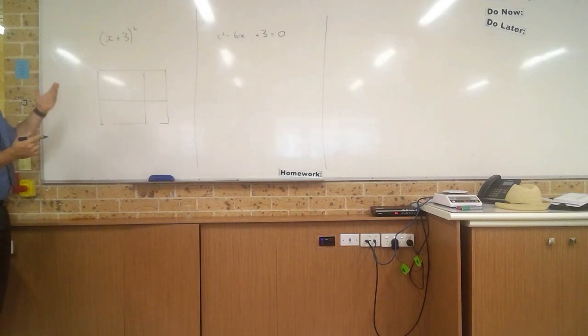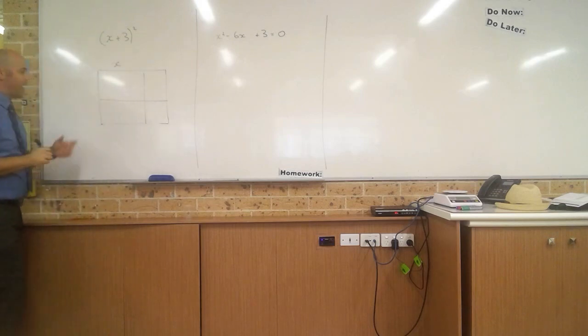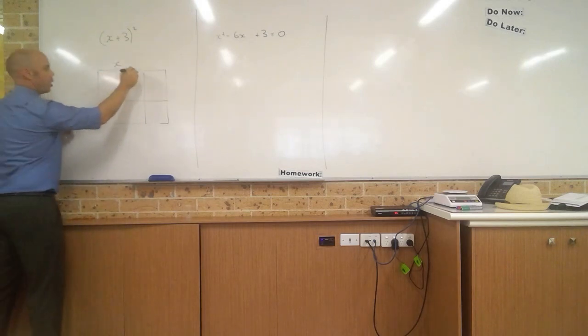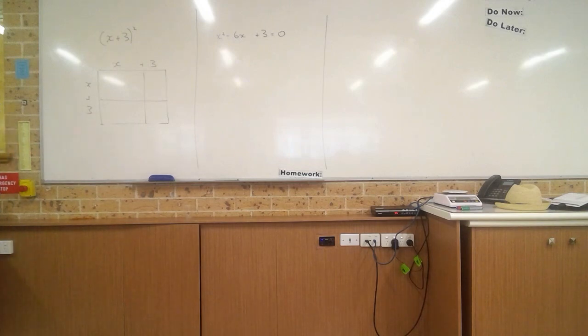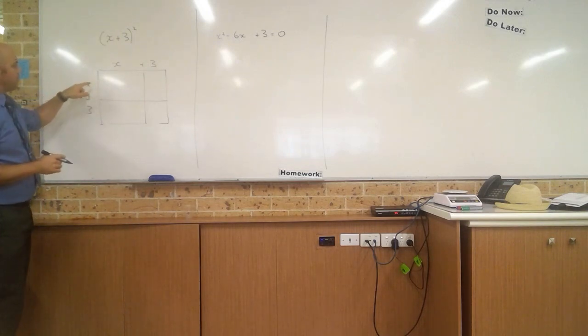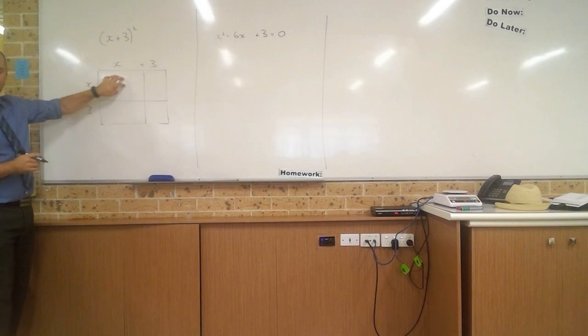It's a square, it's a squared expression, and so we can actually express it as the two sides of a square, x plus 3 on one side, x plus 3 on the other side, so a square has the same sides on both, and if we do the area of each part of this shape, first of all, what's the area of this part of the shape, Isaac?